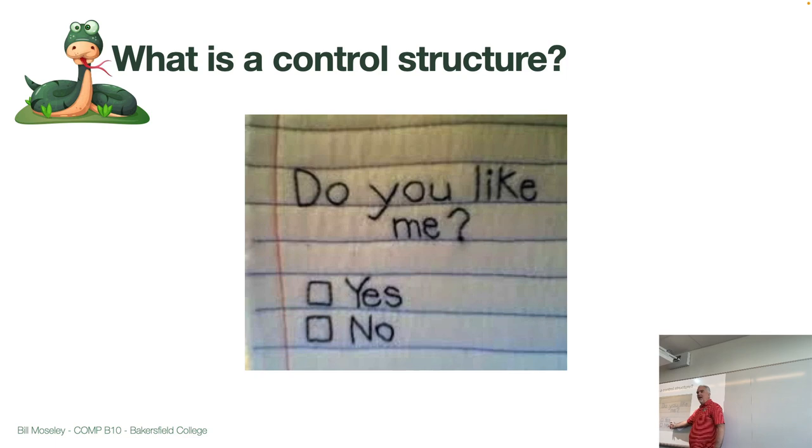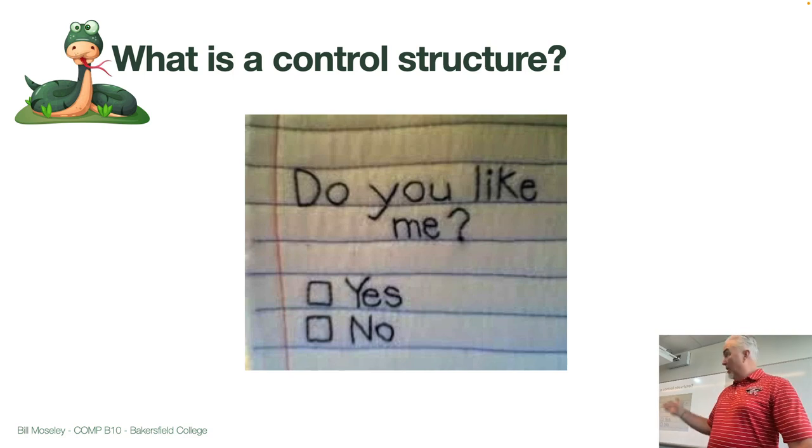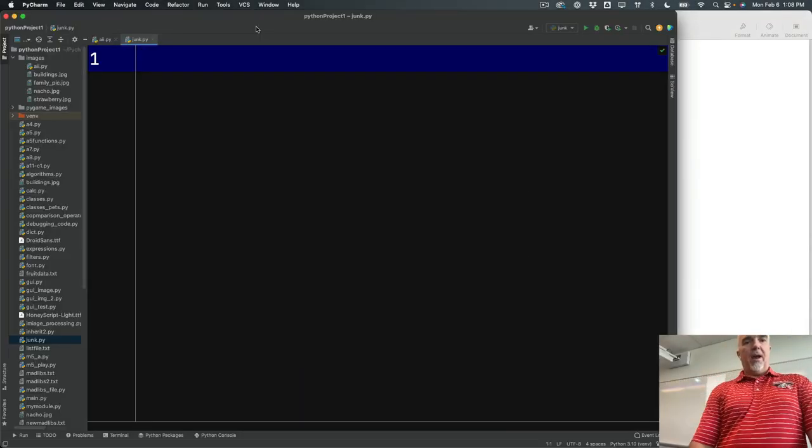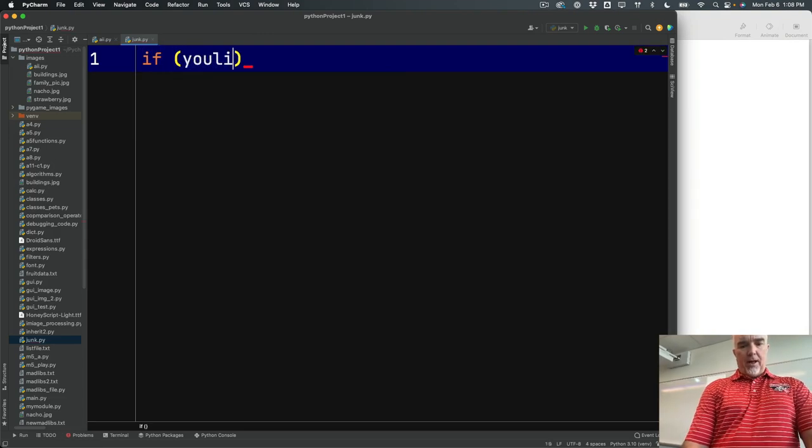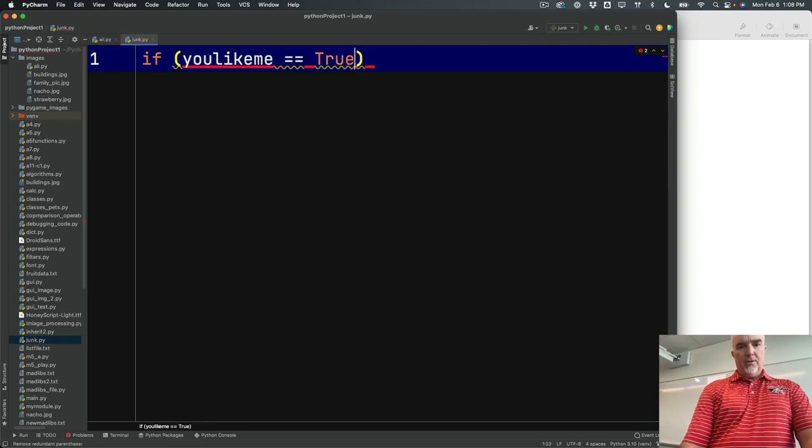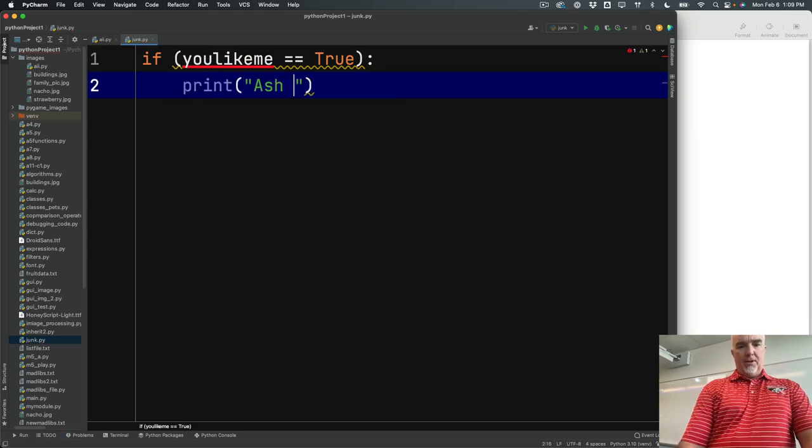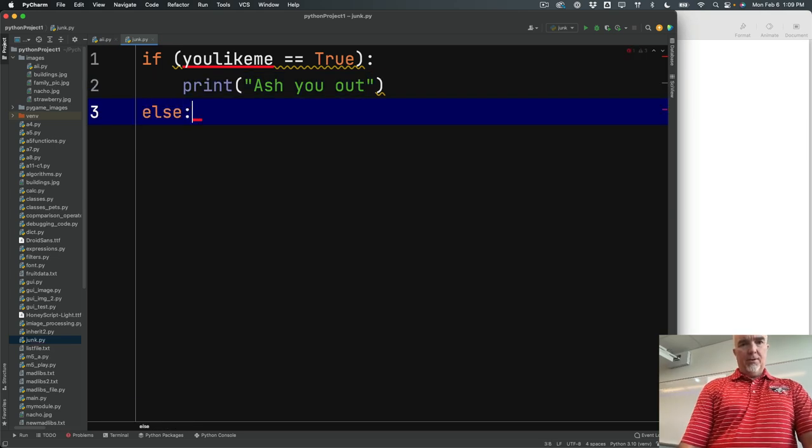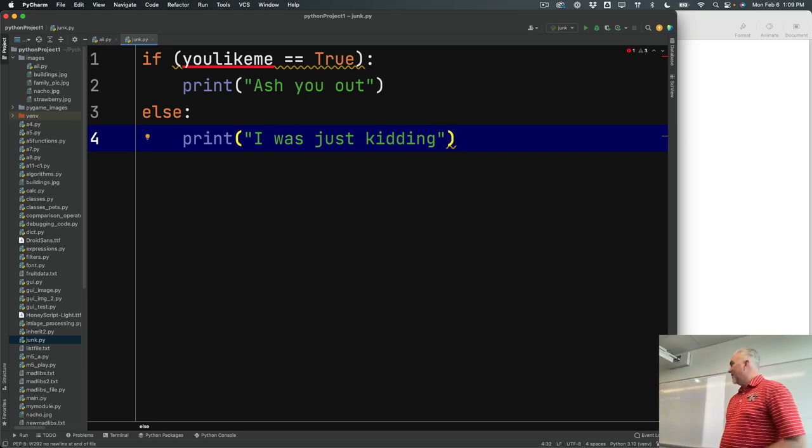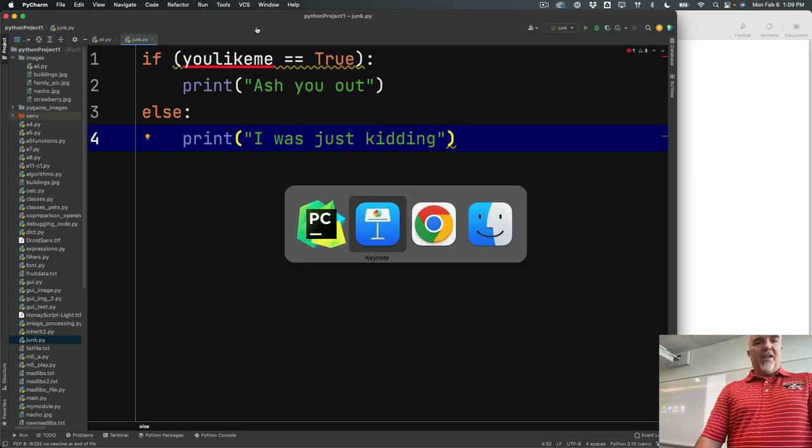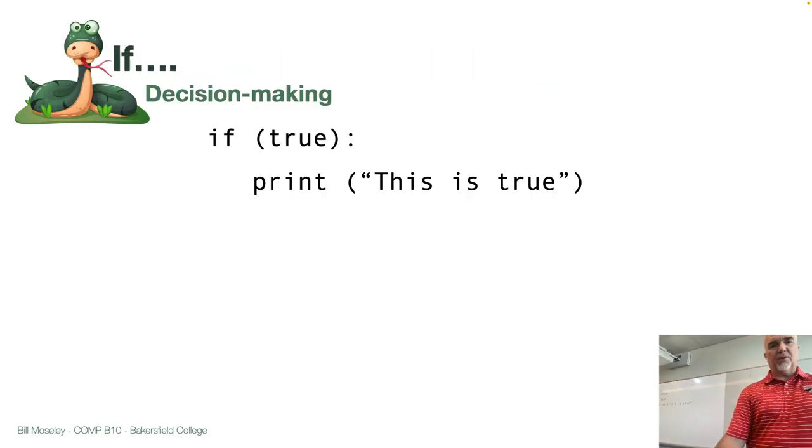It has a question or assertion that can be answered in one of two ways. And based on that answer, I, as the author of this note, may take one action or another, right? Because I'm asking for information. So if I was going to code this in actual Python code, I might say, if you like me equals true, then print ask you out, else print I was just kidding, right? Something like that. So this is how that control structure would look in code.